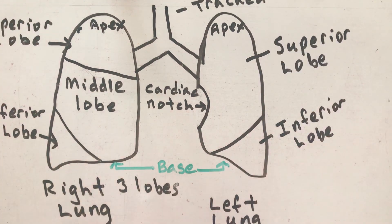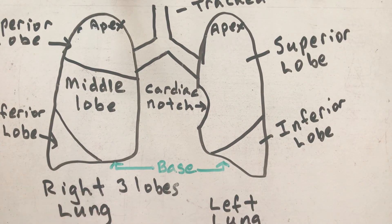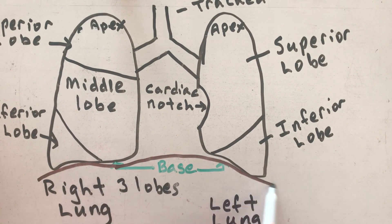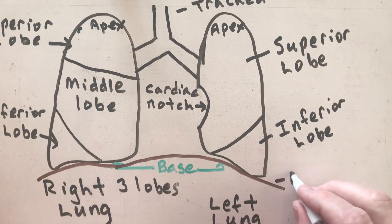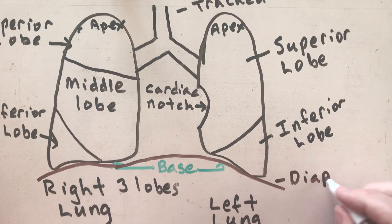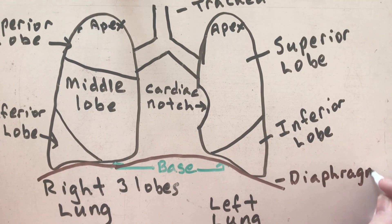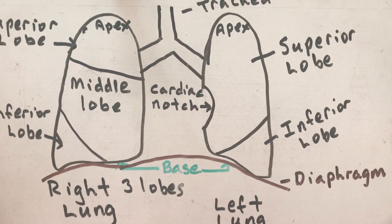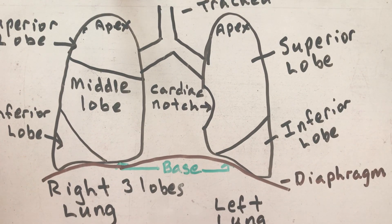This apex goes up so high it actually goes above your first rib. Down here by the base you have your diaphragm — and if you've ever gotten the hiccups, it's because the diaphragm is in spasm. And that's basically the gross anatomy of the lung.